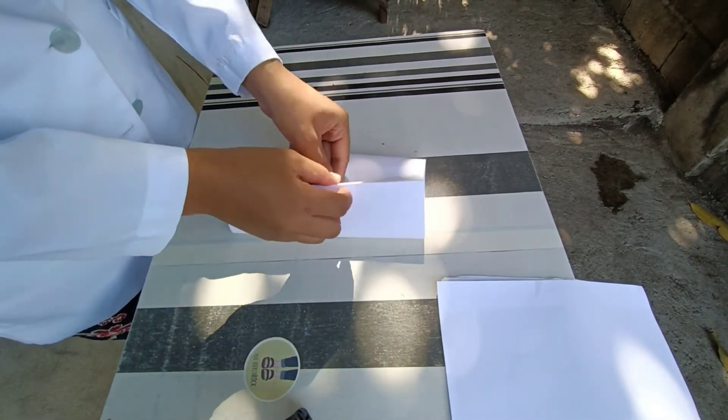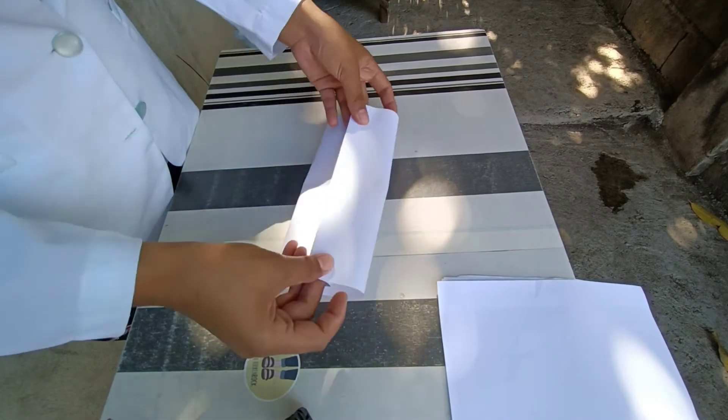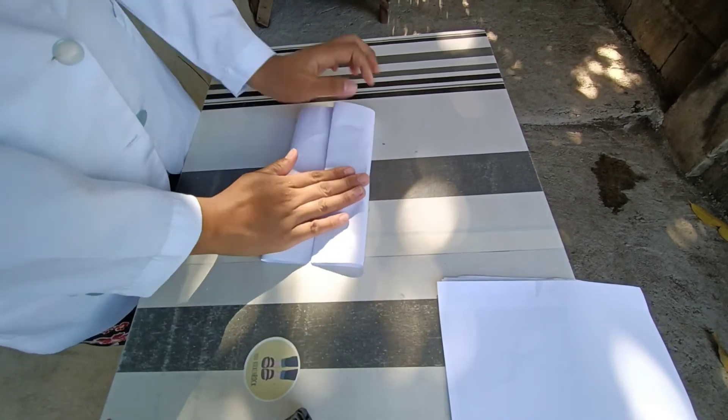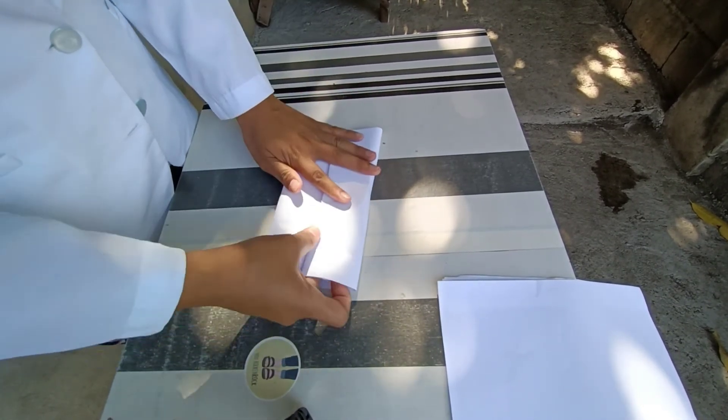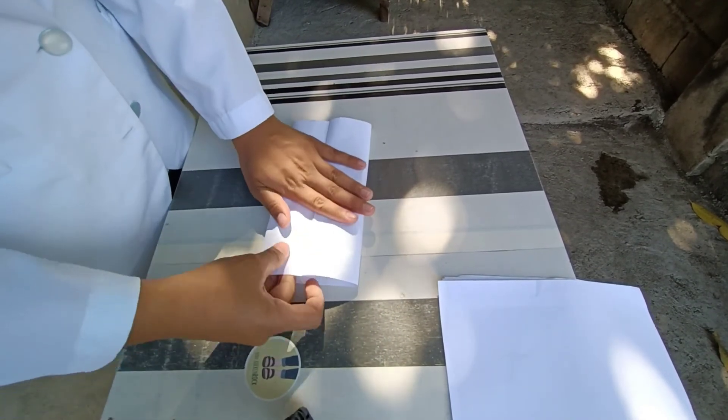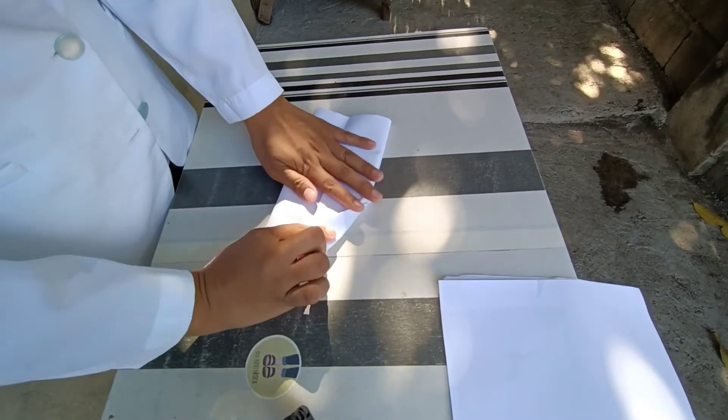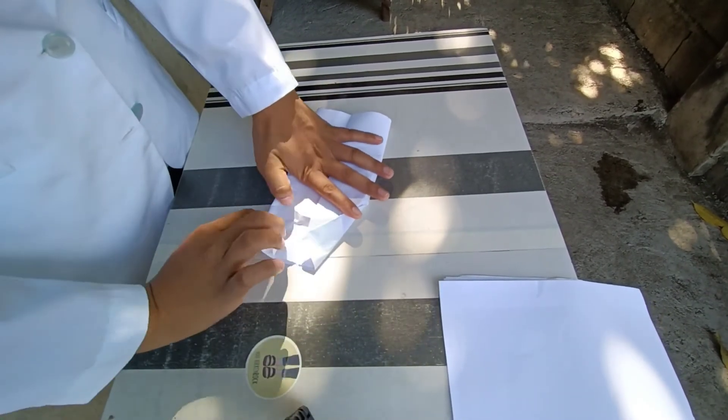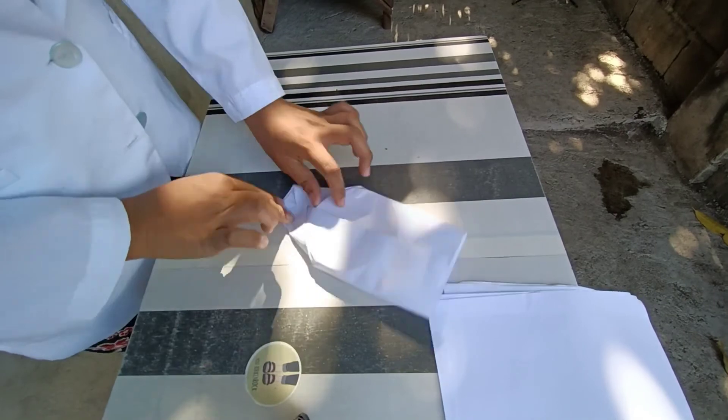We now grab both ends towards the center to meet, overlapping each other. Then pull it to tighten. Now fold like this, both sides, and also from the other side.